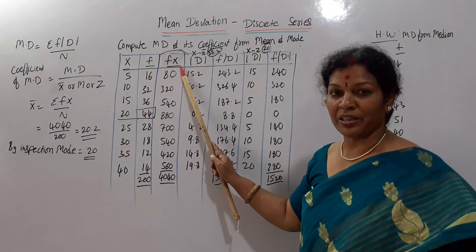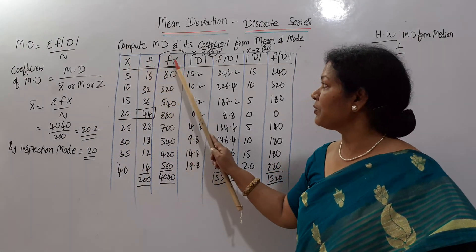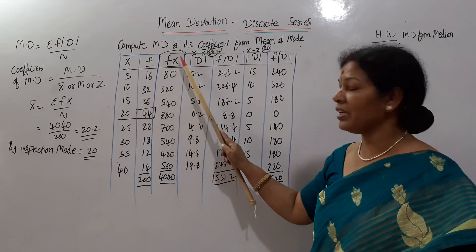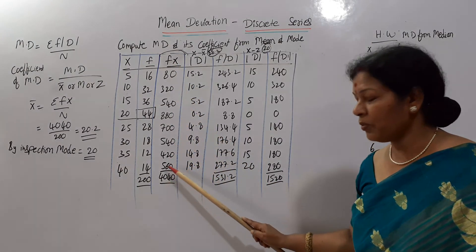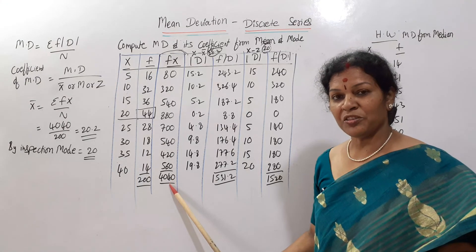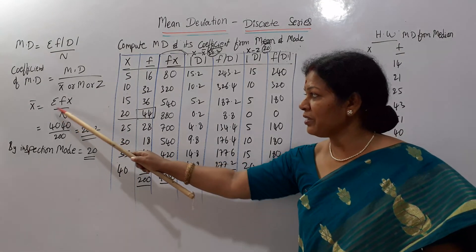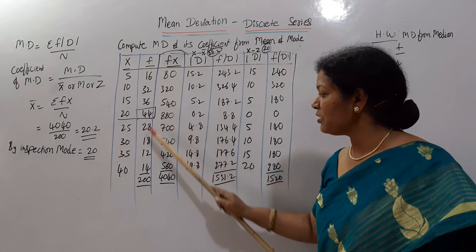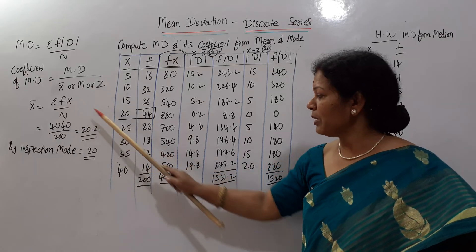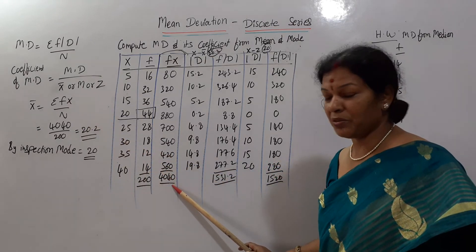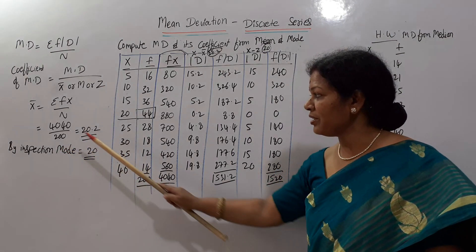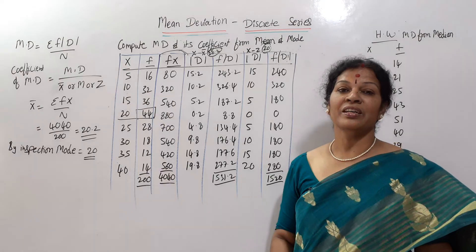We need to calculate fx: 5 into 16 = 80, 10 into 30 = 320, and so on. The total fx comes to 4040. So x-bar = sigma fx by n = 4040 divided by n. Here n = 200, so x-bar = 20.2. That is the arithmetic mean.